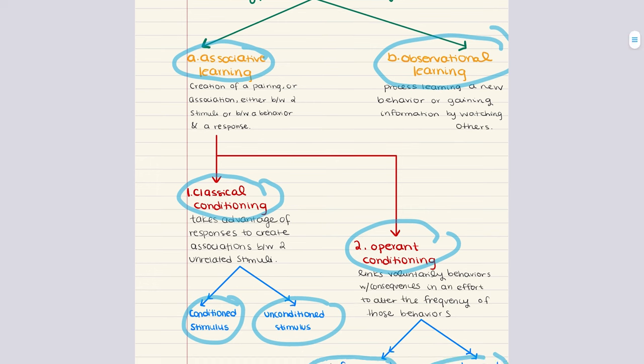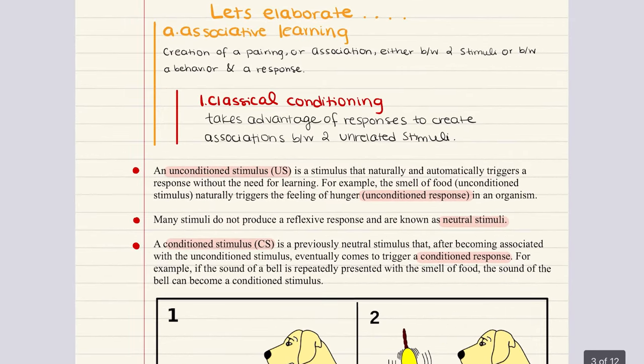Let's go ahead and get started with associative learning. Associative learning is the creation of a pairing or association either between two stimuli or between a behavior and a response. On the MCAT, you're going to be tested on two kinds of learning: classical conditioning and operant conditioning. Classical conditioning is a type of associative learning that takes advantage of biological instinctual responses to create associations between two unrelated stimuli.